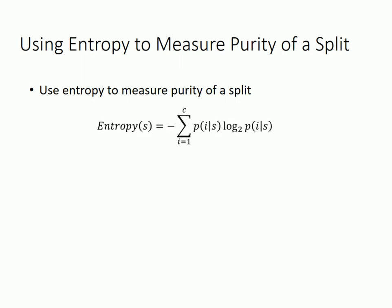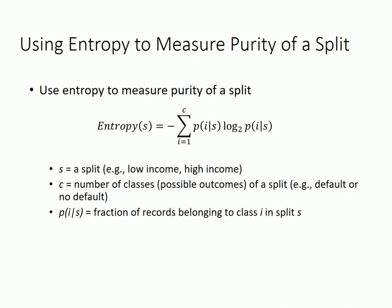The entropy of a split S has this formula. Here, S represents a split — for example, if we classify clients by income, then low-income and high-income are the two splits. The lowercase c is the number of classes, or possible outcomes, of a split. In our example, default or not default are the two possible outcomes, so c equals 2. P(i|S) means the fraction of records belonging to class i in split S. Don't worry if you are confused — once you see an example, it will become pretty clear.